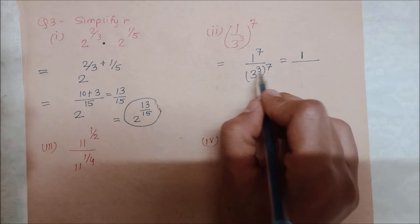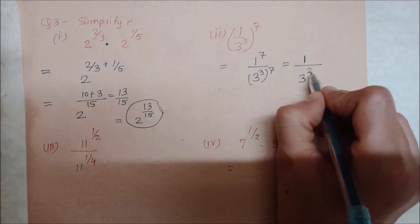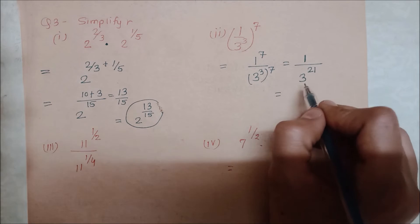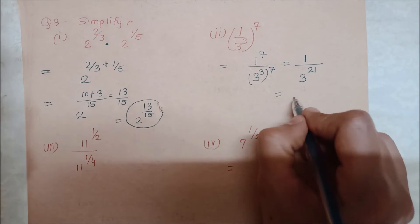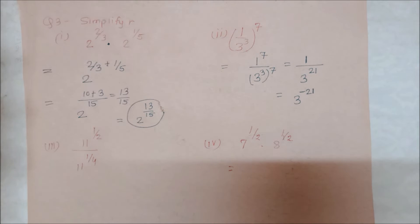According to the power rule, 1 as such becomes 1 because 1 to any power is 1. So this will be 3 to the power 21. When we bring the denominator up, the power becomes negative, so it's 1 upon 3 to the power 21.